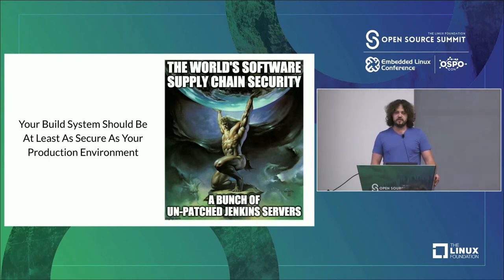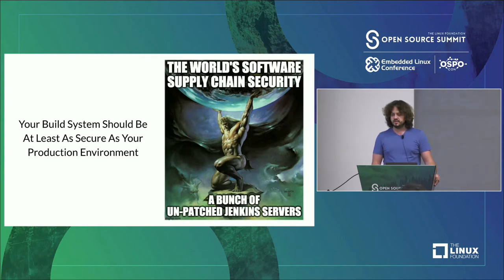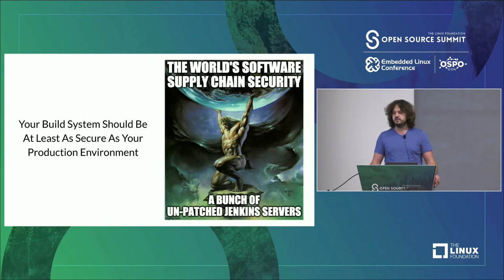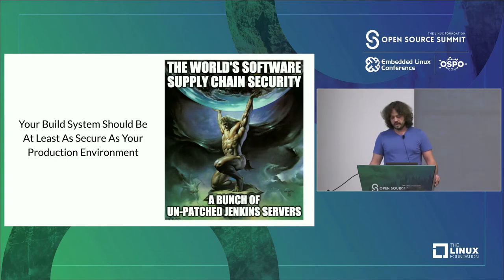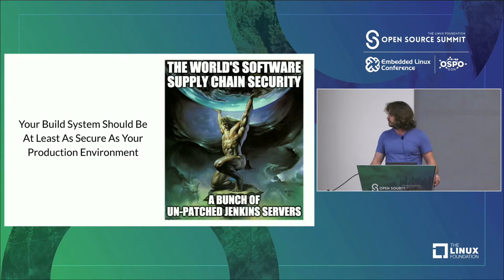This is what led to a whole bunch of high-profile attacks this year: things like the SolarWinds attack, the Codecov attack, the recent Travis CI secrets leak. This happens constantly. We spend all this time and dollars buying expensive solutions to protect our runtimes, and then deploy to them using amateur tooling. The world's software supply chain security rests on a bunch of unpatched Jenkins servers in closets holding all of that up.